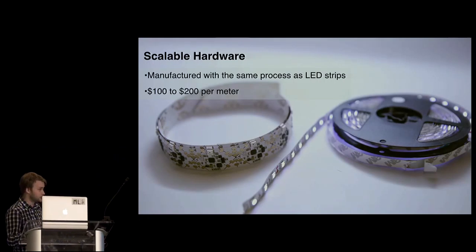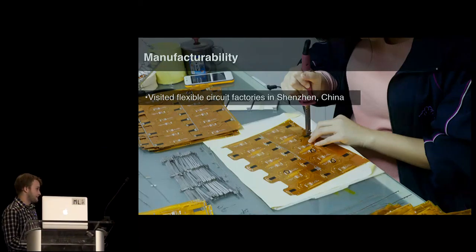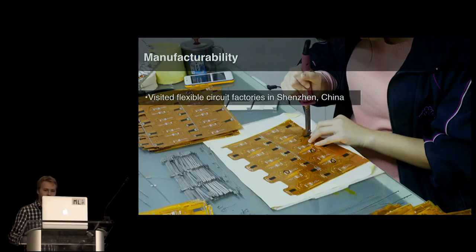And from the start of this project, we wanted to have our hardware scalable. So we used the same manufacturing process as the LED strips. And when we manufactured, the cost was about $100 to $200 per meter, depending on what sensors we have. So we visited different factories in China, in Shenzhen, which is the center of this flexible electronics industry now. And we designed it from the start to be manufacturable, to understand the process.